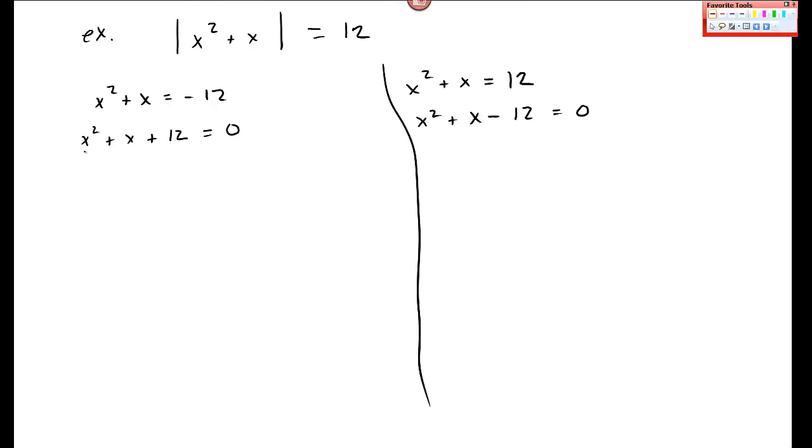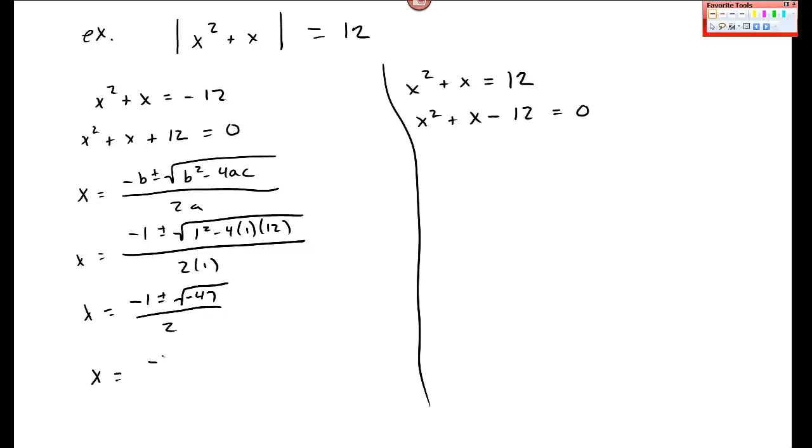They're two separate equations. Let me solve them. This one here, I try to factor it. I want it to be kind of 4 and 3, but there's no negative sign there. So let me try the quadratic formula. Negative b plus or minus square root of b squared minus 4ac over 2a. b is 1. 1 squared minus 4 times 1 times 12. And already it looks like I'm going to get complex solutions out of this. 1 minus 4 times 12 is I get negative 47. So I think I get x is negative 1 plus or minus i square root of 47 over 2 for two solutions.